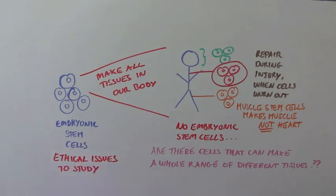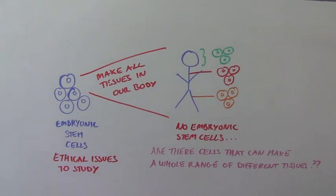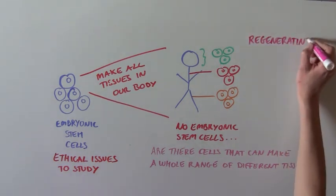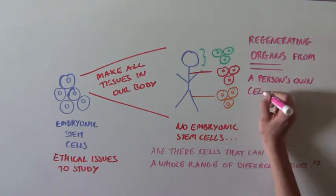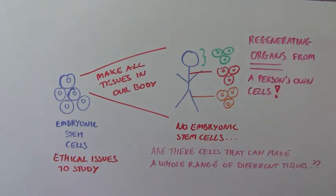If there existed cells that resembled embryonic stem cells that could produce a variety of different tissues, it would open up many opportunities for regenerating entire organs made with a person's own cells, eliminating many complicated aspects associated with transplants, artificial organs, etc.